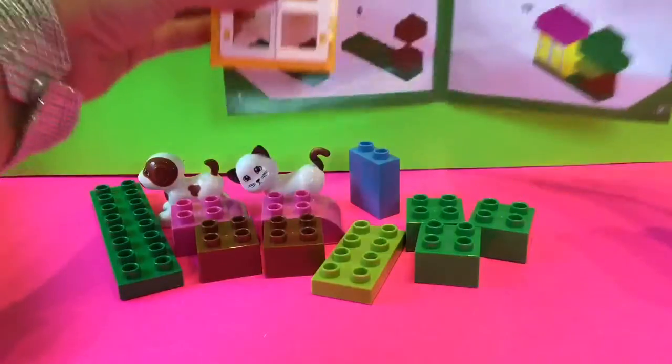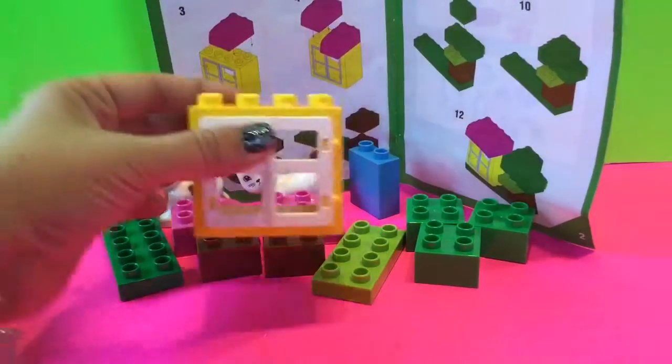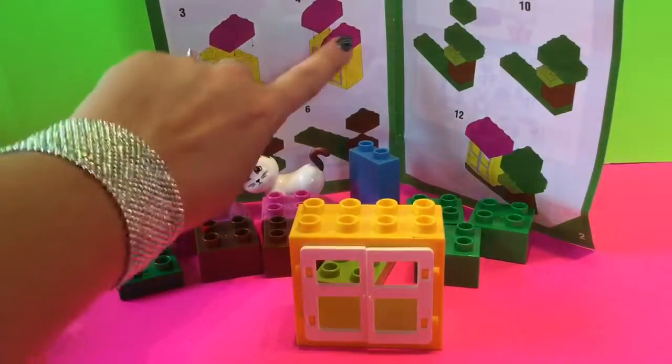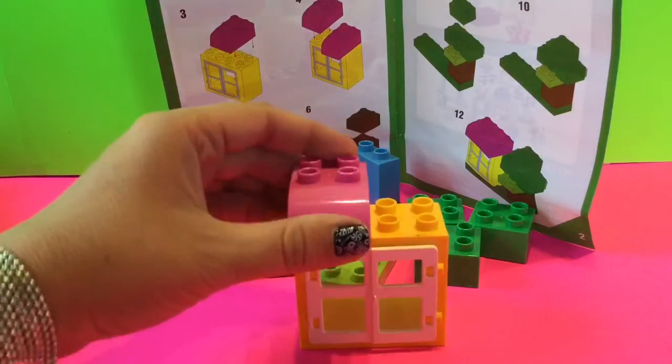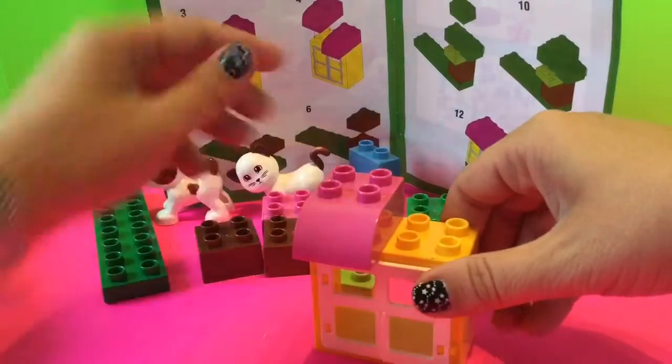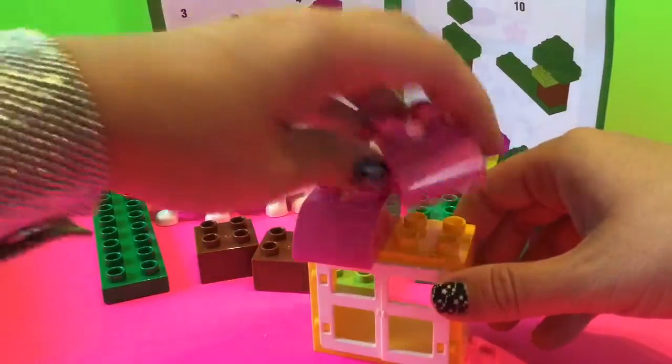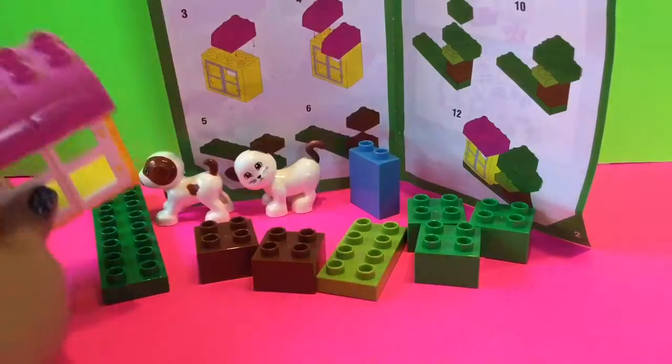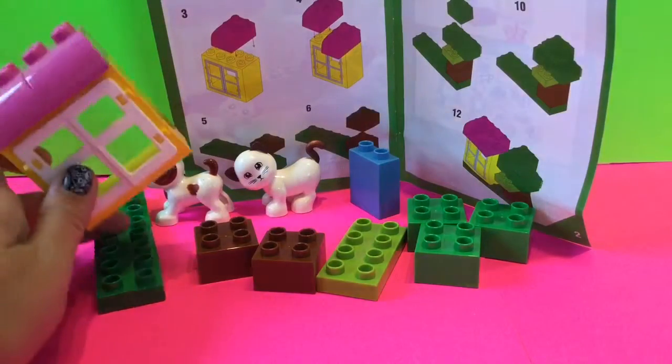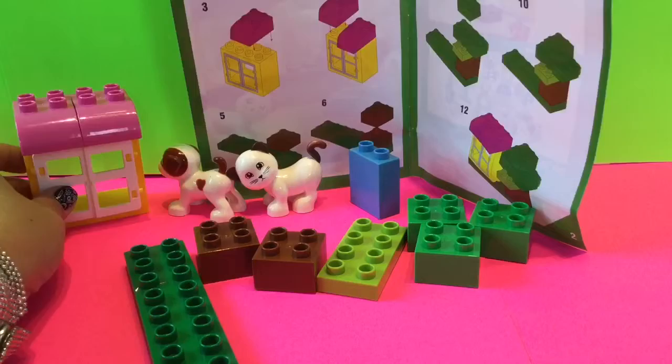The next thing we're gonna do is follow along with these directions. It shows putting these pink pieces on for steps three and four. I'm gonna put one on here and one on here, then set that to the side. We're done with that for right now.